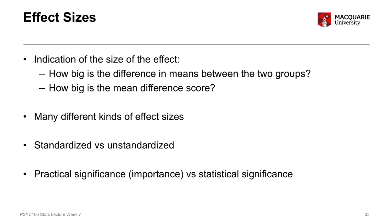For example, if attending PAL sessions for PSYC 105 improves your grade by an average of two points — say from 65 to 67 — that's not a very big impact on a 100-point scale. But if attending PAL sessions could improve your score by 10 points on average, from 65 to 75, that's a much bigger effect. You'd be more likely to attend if the payoff is larger, and that's the kind of information effect sizes provide.